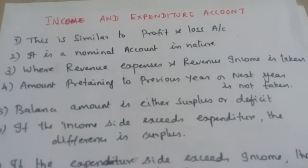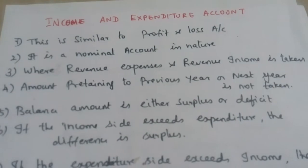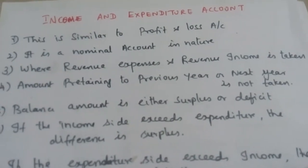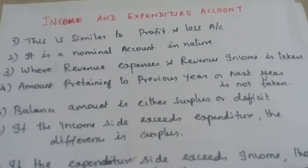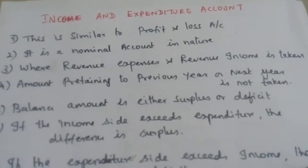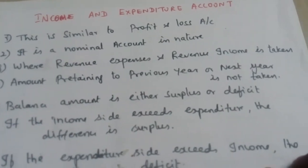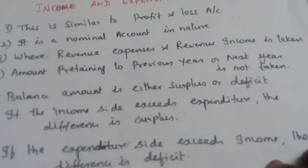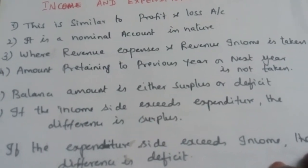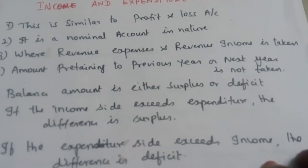In the income and expenditure account, we have to take into consideration only the revenue expenses and the revenue incomes. We should exclude the capital expenses and capital incomes. Similarly, amounts pertaining to the previous year or next year should not be taken. Only the amount pertaining to the current year alone should be taken into the account.